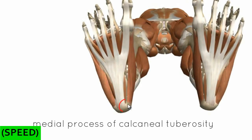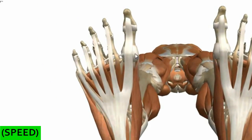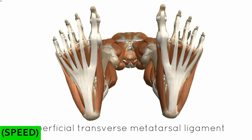It actually attaches to the medial process of the calcaneal tuberosity, and then it extends forward and expands along the digits, forming these longitudinal bands of fibres. Just distal to the metatarsophalangeal joint, there are horizontal connections between these longitudinal bands, and these horizontal connections form the superficial transverse metatarsal ligament.